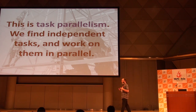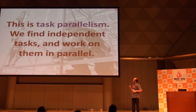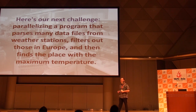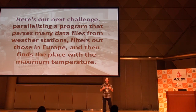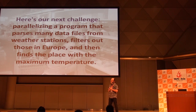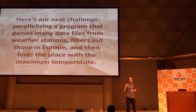That's task parallelism — where you look at your code and say it does this and then this, and these could run at the same time. There's another kind of parallelism I also want to address. Here's the next problem: I have a big dataset about climate — temperature data from thousands of weather stations worldwide — and I want to find all data from stations in Europe and find the place with the maximum temperature.